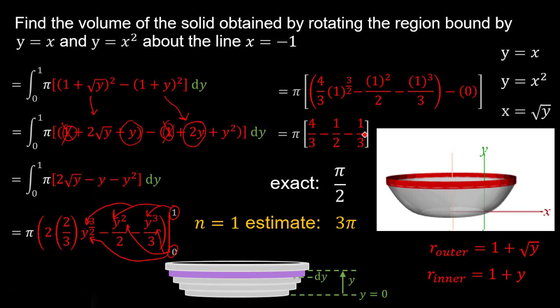That seems surprising for such a complicated-looking volume, but it turns out to be just π/2, which is much less than our n equals 1 estimate of 3π — confirming it was a gross overestimate. If you can understand and execute this, you should be in great shape to tackle pretty much any washer method problem. Next video, we'll discuss the technique of cylindrical shells.